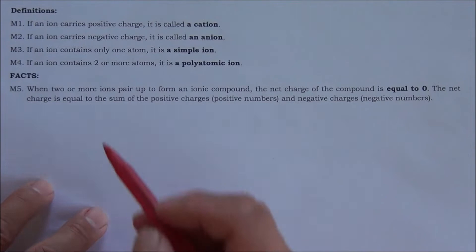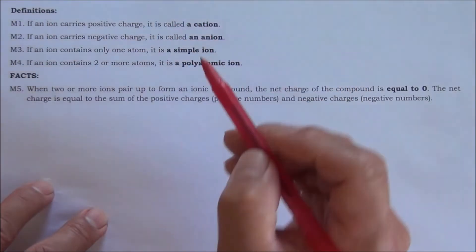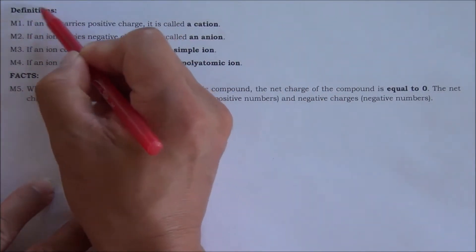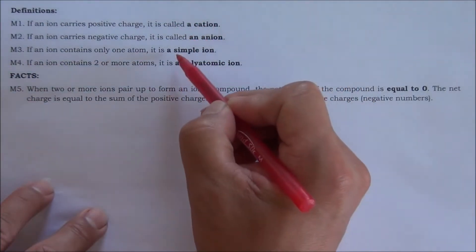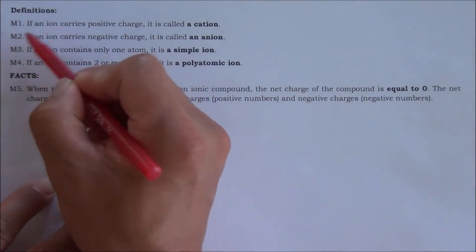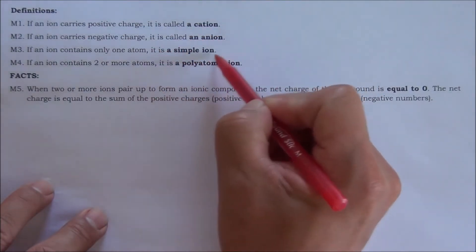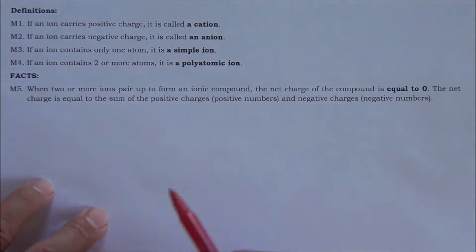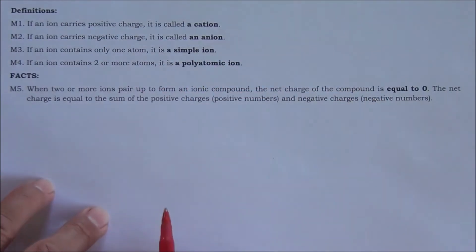However, an ion can be both a cation and a simple ion at the same time. An ion can be both a cation and a polyatomic ion at the same time. Similarly, an ion can be both an anion and a simple ion, or both an anion and a polyatomic ion at the same time.